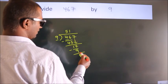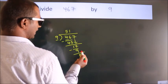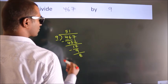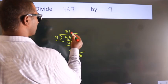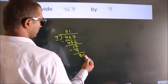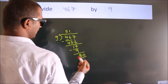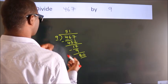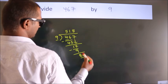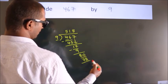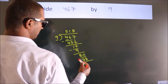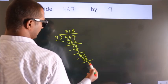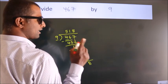After this, no more numbers to bring down, so what we do is put a dot and take 0, giving us 80. A number close to 80 in the 9 table is 9 times 8, which is 72. Now we subtract and get 8.